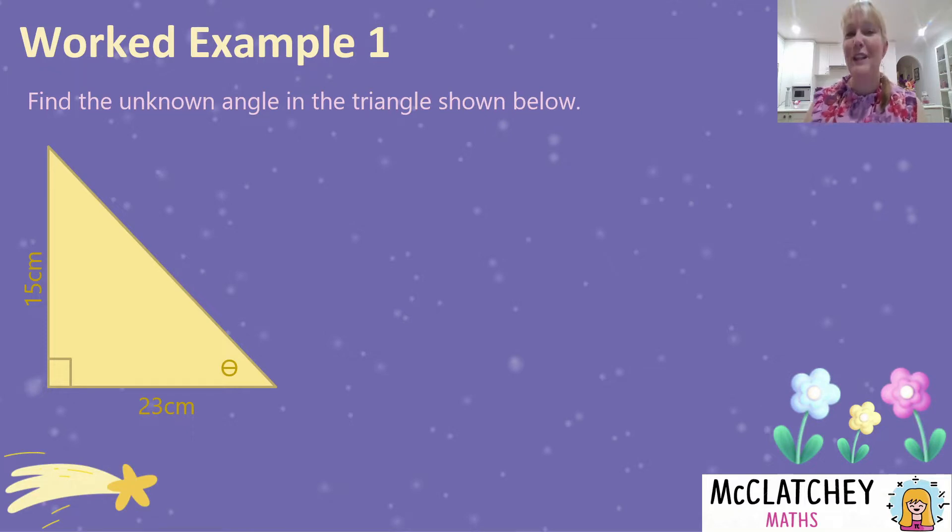So let's start with our first worked example. We need to find this unknown angle theta in this triangle shown below. We've got two sides, a 15 and a 23. Don't know what the length of the hypotenuse is. We could find that out with Pythagoras's theorem, but that's a whole lot of unnecessary work. We don't need to find the other side. We need to find the unknown angle.